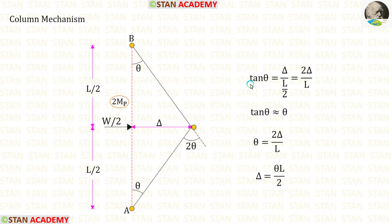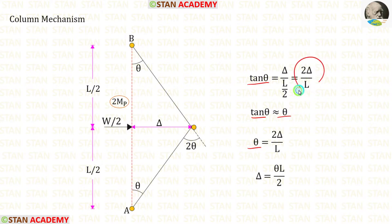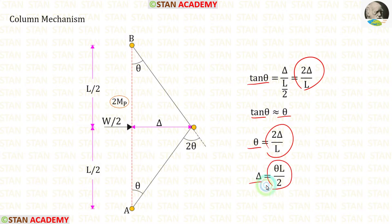The value of tan θ will be very small, so tan θ ≈ θ. In this case we take θ = 2δ/L, from which we get δ = θL/2.